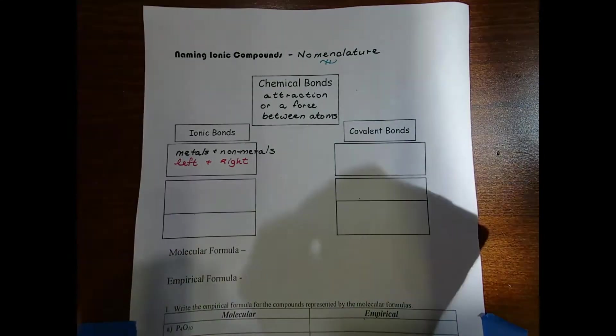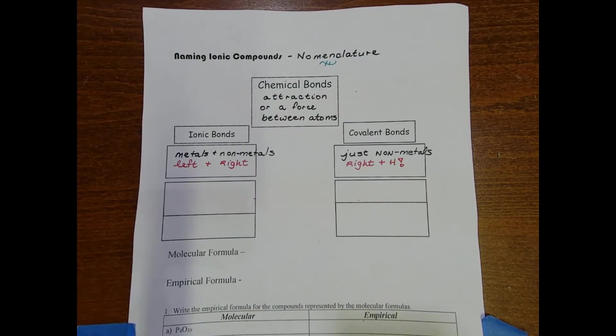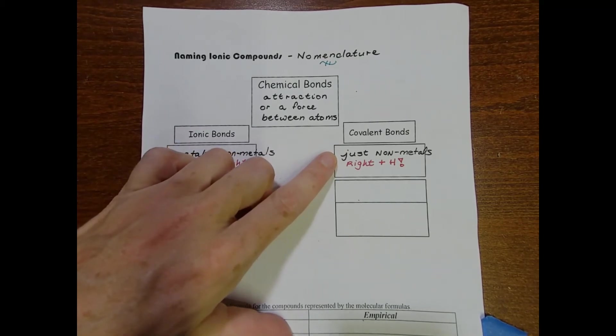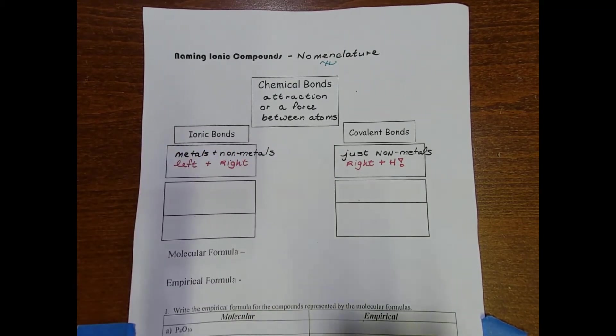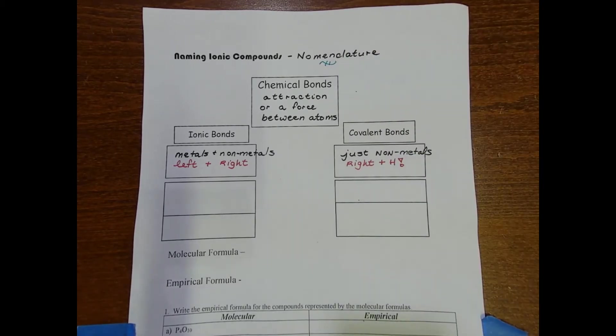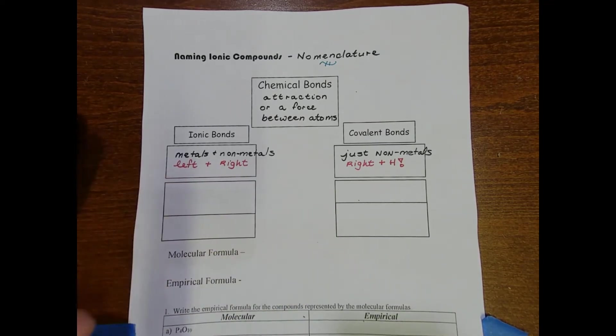Covalent bonds on the other hand are composed entirely of nonmetals, so we're looking at elements on the upper right hand corner of the periodic table. Don't forget about hydrogen because hydrogen is kind of misplaced at the top of group one. Another difference between ionic and covalent bonds is what happens to the electrons.